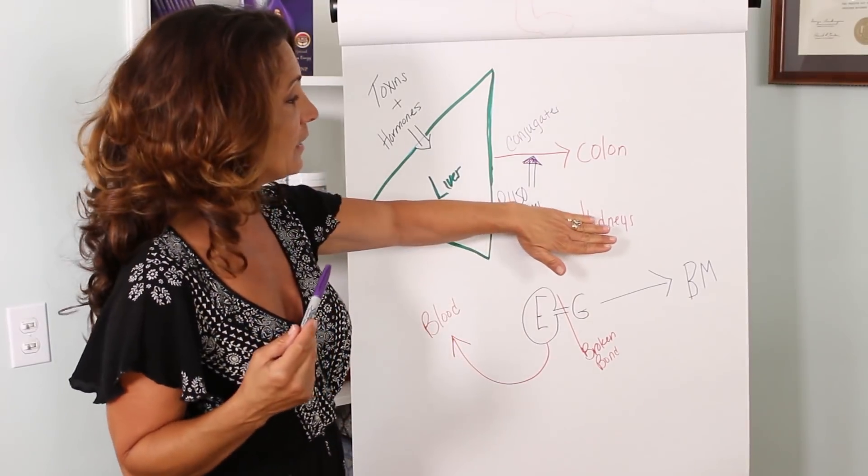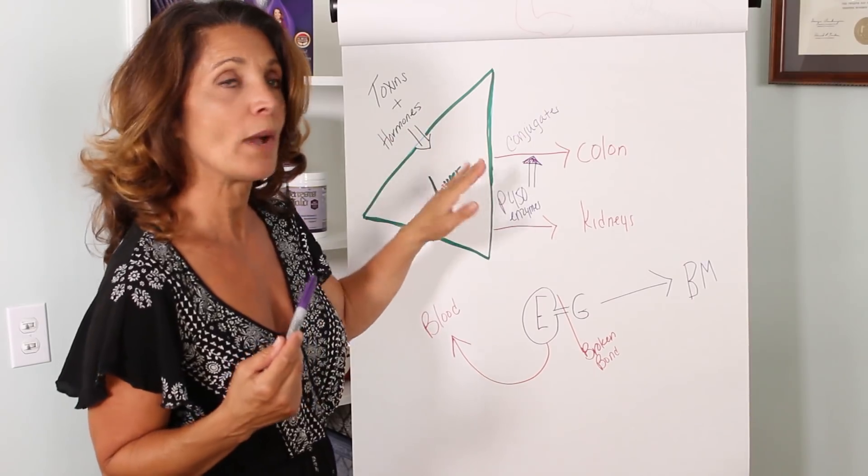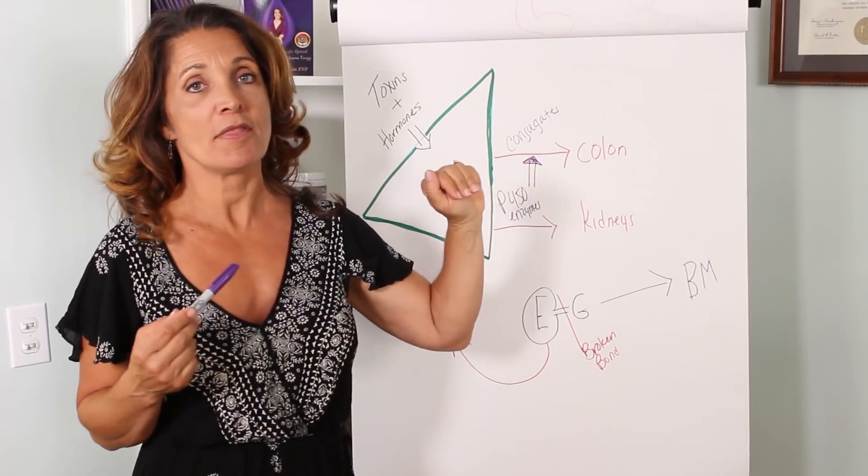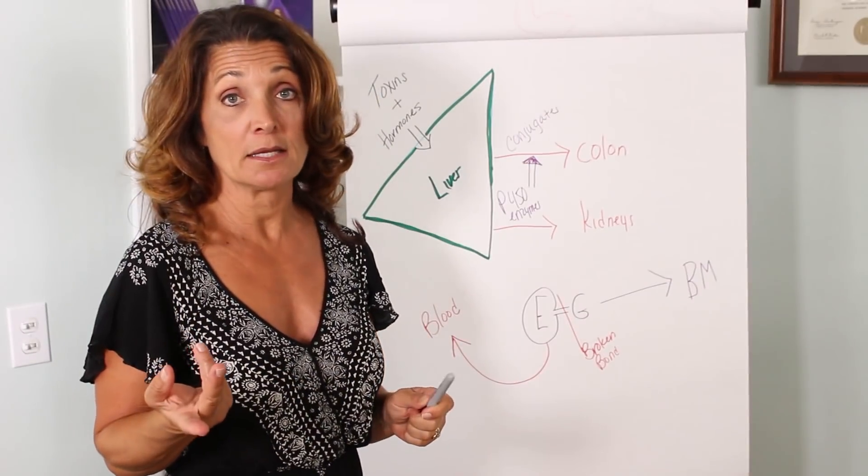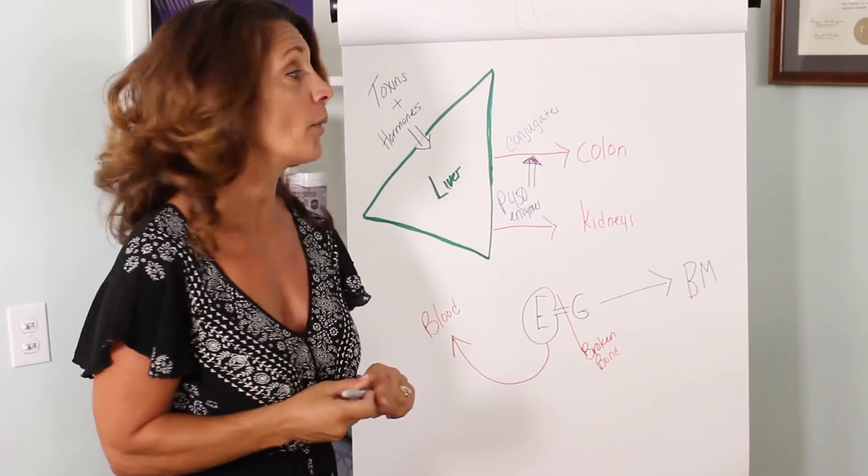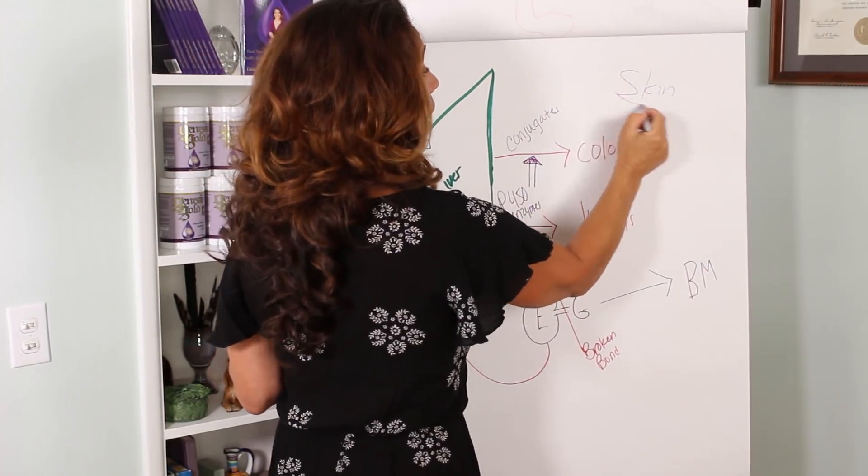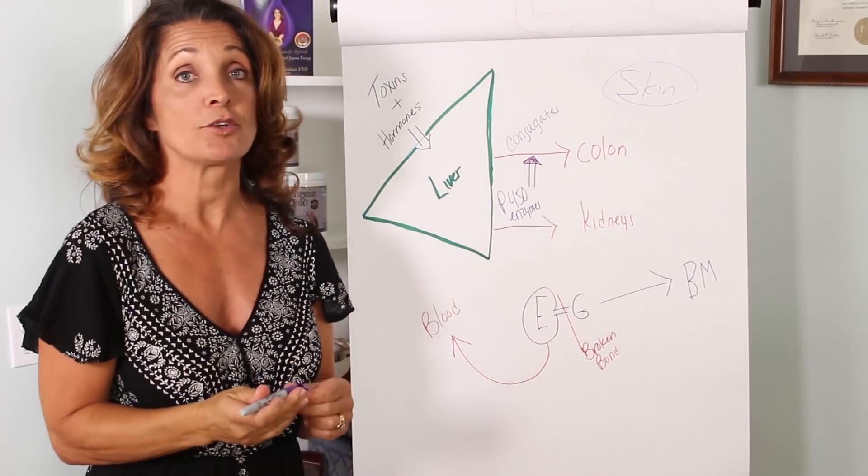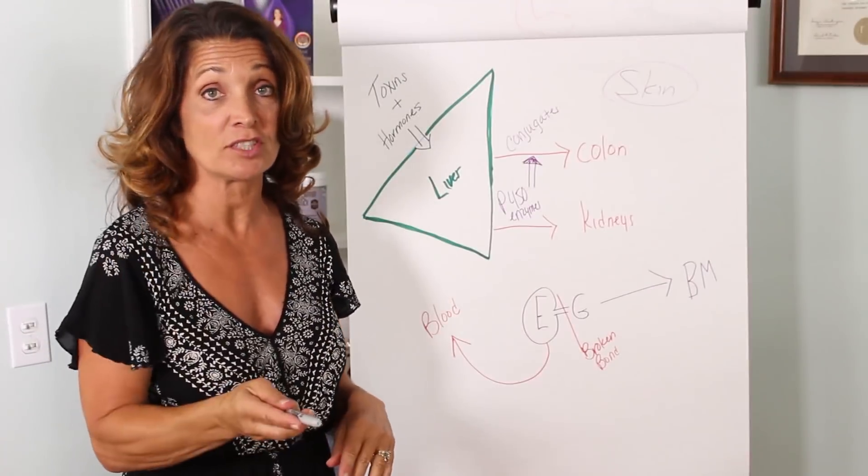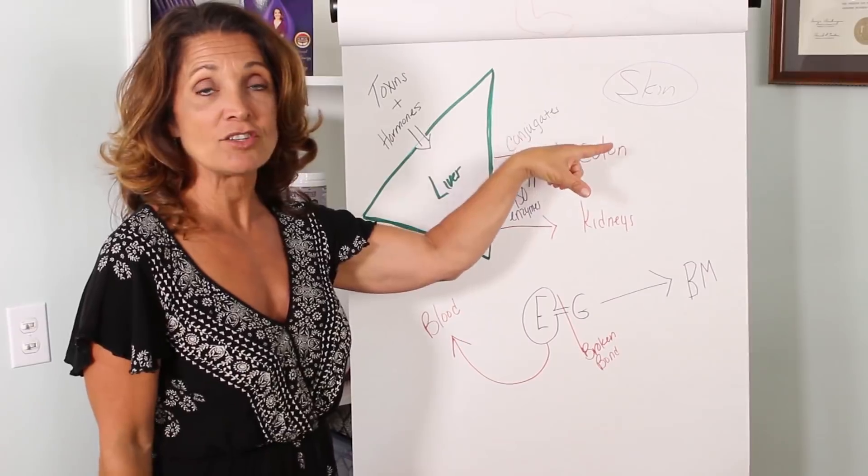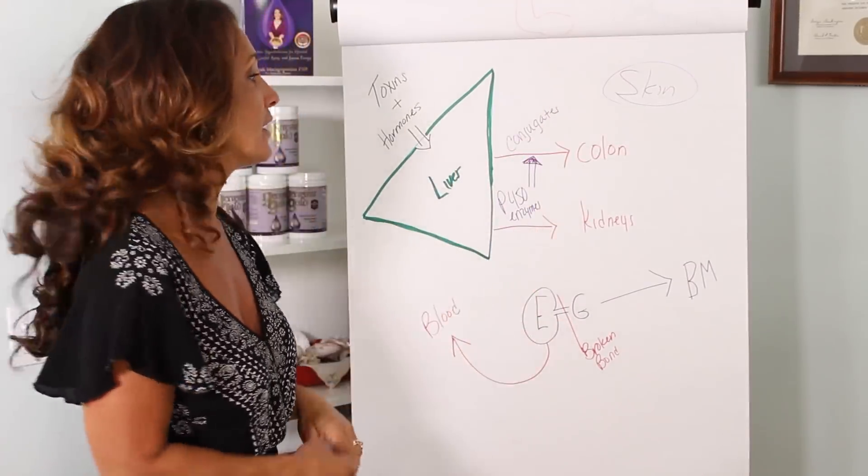If your kidneys are doing their job okay, but the liver is kind of overwhelmed, your colon has to then take over and do more of the job. Or if you're constipated, then the third way out is through your skin. So oftentimes when you're toxic and you're not using your normal detoxification pathways efficiently, you're going to see rashes and acne on your skin.